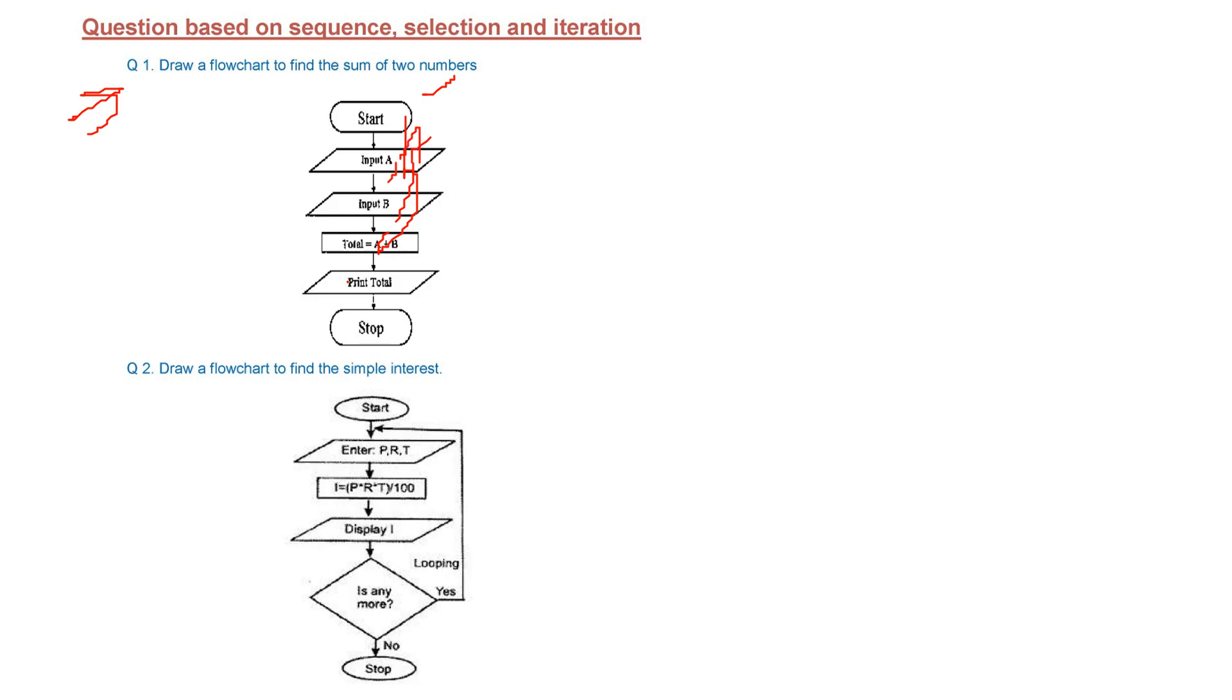Then we have total equals A plus B, that is we add them, assign to total and then just print. So where this actual computation is going on, we showed it in the form of rectangle.